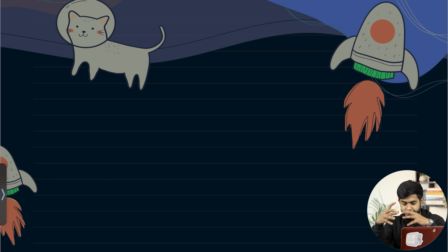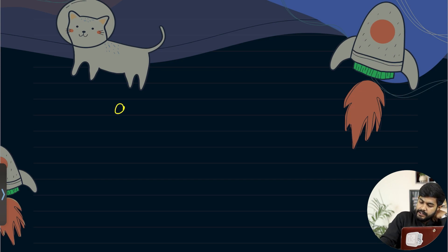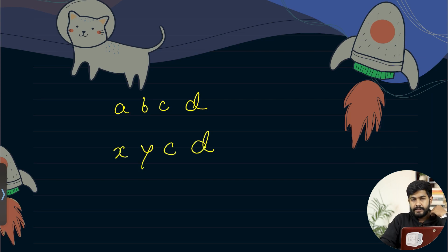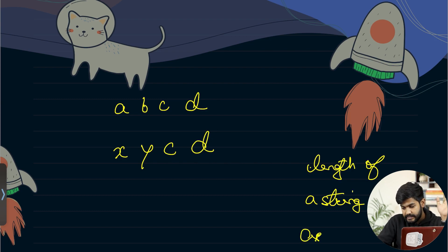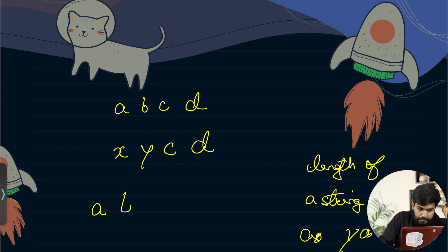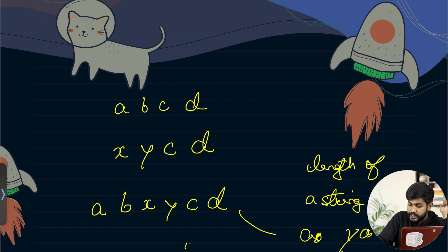So now let's move forward. Talking about this problem, we are given two strings. The very first string is A, B, C, D and the very next string is X, Y, C, Z, C, D. It is telling us that we need to find the length of a string which contains both X and Y as subsequences. This length should be as minimum as possible.